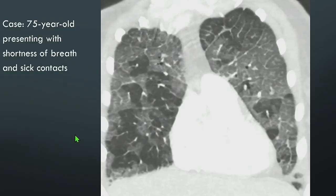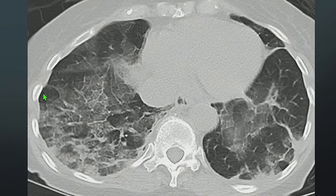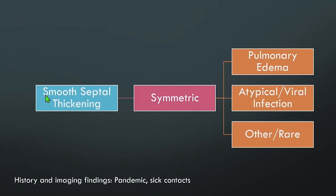Another patient: a 75-year-old presenting with shortness of breath and sick contacts. Aside from a little ground glass, there is smooth interlobular septal thickening outlining those secondary pulmonary lobules — bilateral on axial imaging as well. During the pandemic and with sick contacts, this was a patient with COVID-19 pneumonia.